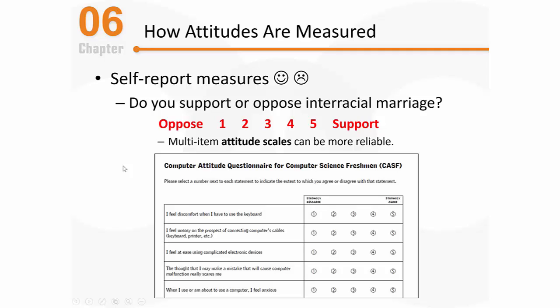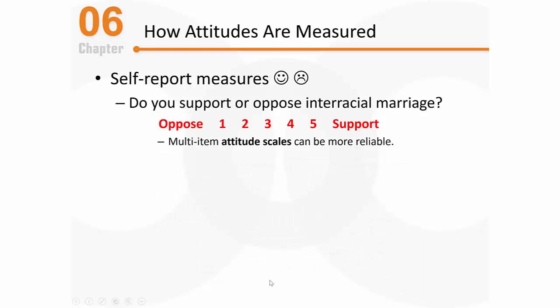For example, this particular attitudinal scale is designed to assess if college freshmen are suited for a major in computer science. These questions are structured more like a typical Likert scale because we're trying to determine if people agree or disagree with a variety of statements, all focusing on computer usage. Using multiple questions, the ultimate measure we compute tends to be more reliable overall than using a single measure.